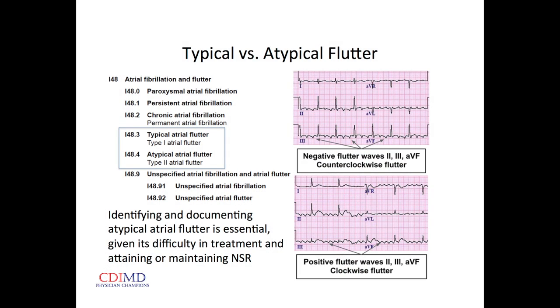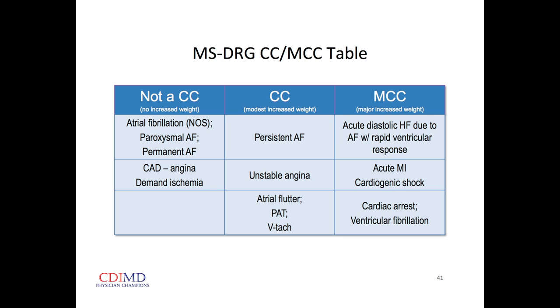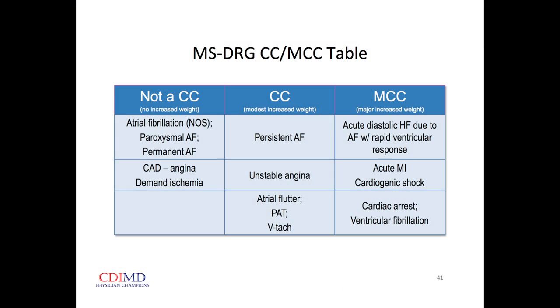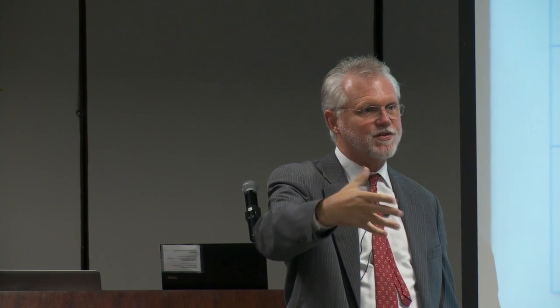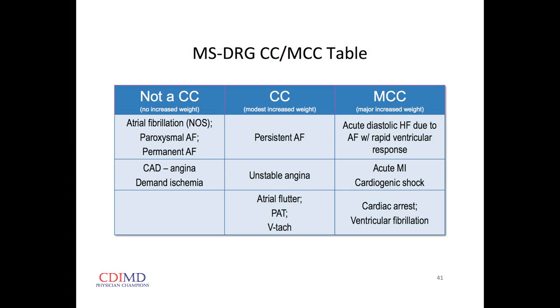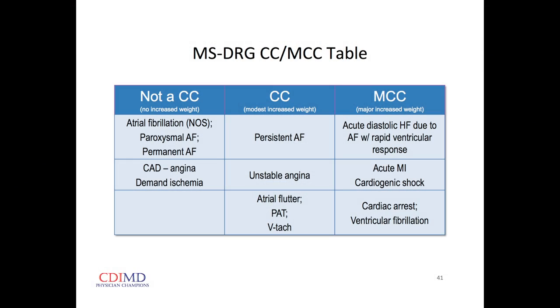I do not know the difference between typical and atypical flutter — I hope you do. You'll have available tables of words that get no credit, words that get a little increased credit, and words that get great increased credit. If somebody comes in with rapid atrial fibrillation and is having an episode of heart failure because the ventricle isn't spending enough time in diastole to fill, that might be acute diastolic heart failure, and we get big credit for that. Sometimes it's not obvious what it is, and then you can just call it combined.